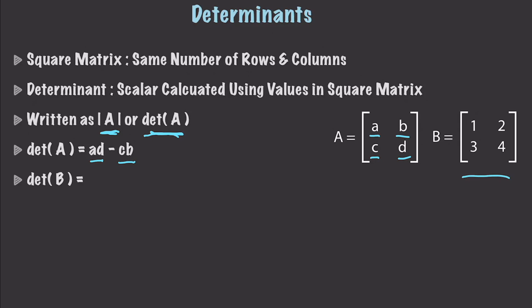I'll use this matrix here to show you how to get the determinant of B. I'm going to take the 1 and multiply it times the 4, and then subtract from it 3 times 2. That of course gives me a value of 4 minus 6, which gives me a determinant for that matrix of negative 2.